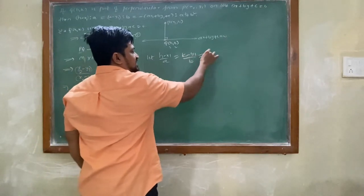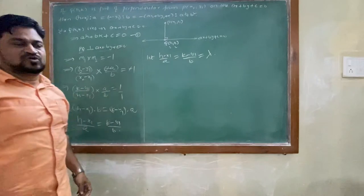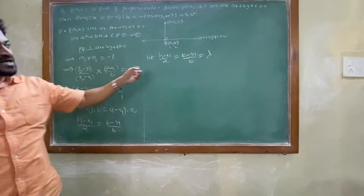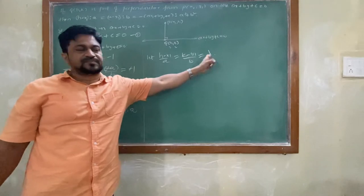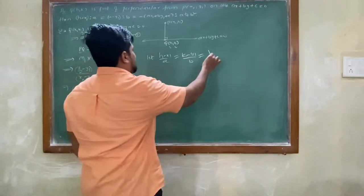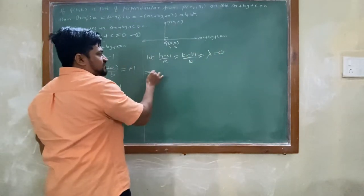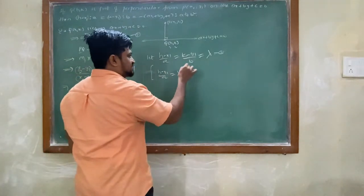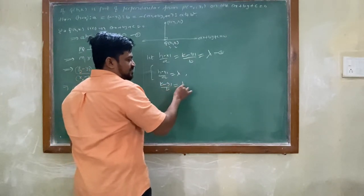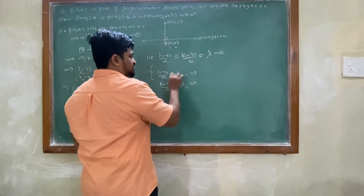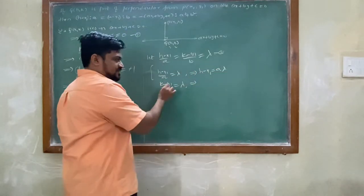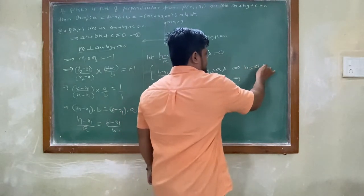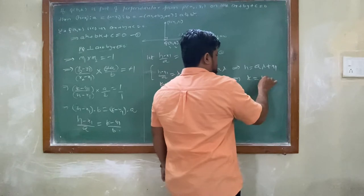Let (h-x1)/a = (k-y1)/b = λ. Since there are three terms, we equate both expressions to λ. This gives h-x1 = aλ and k-y1 = bλ, which implies h = aλ+x1 and k = bλ+y1.